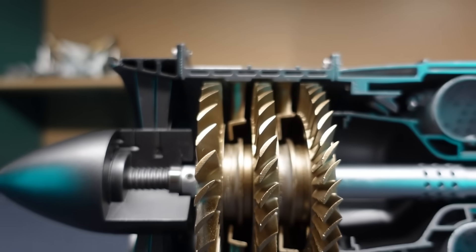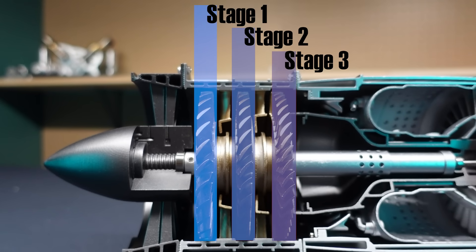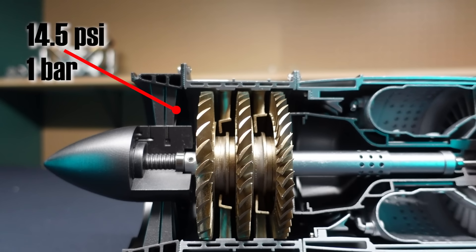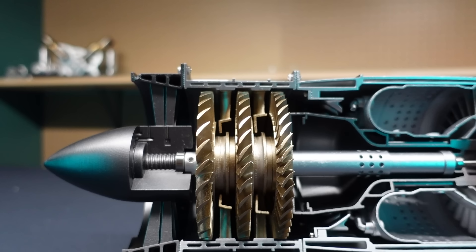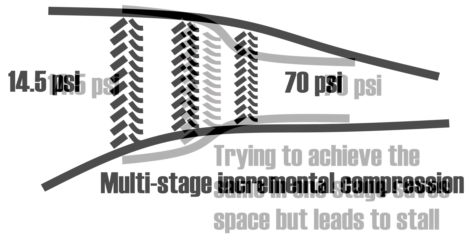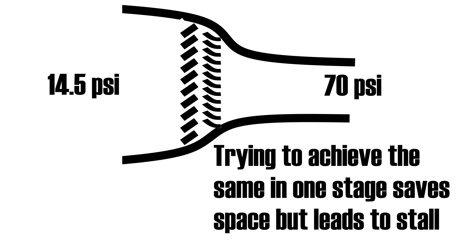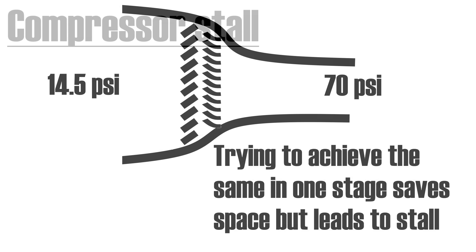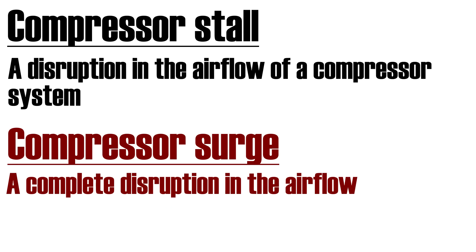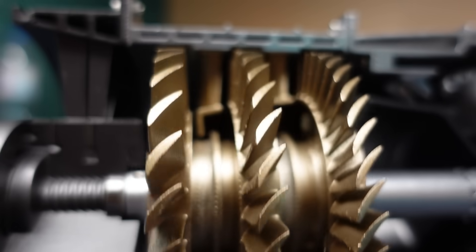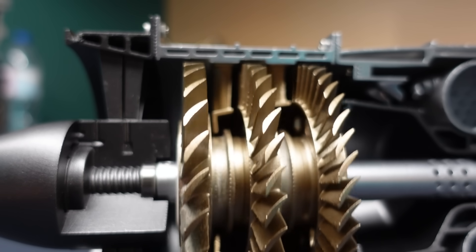This tells us that the air inside a jet engine is compressed in stages. The air enters the compressor section at atmospheric pressure — 14.5 psi at sea level — but by the time it exits, it will have a pressure of around 70 psi. If we tried to achieve this compression with a single rotor and stator, we would likely encounter compressor stall — a disruption in airflow that can reduce power if mild, or damage the compressor if complete, at which point it's referred to as compressor surge. Compressing the air in stages is more efficient and helps prevent compressor stall.